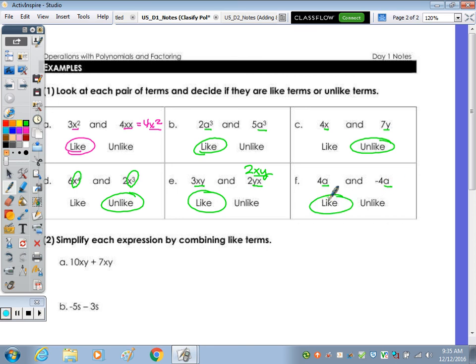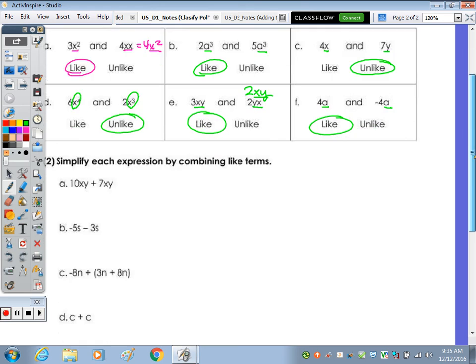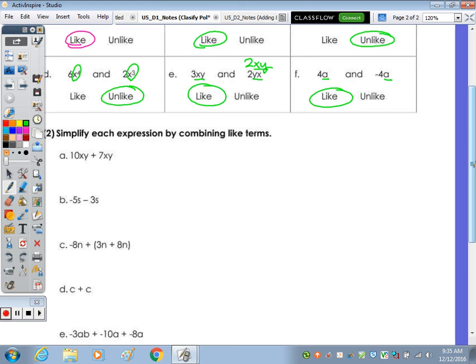So we're gonna, in the expressions below, a through h, just go ahead and combine like terms. So in a, we have 10xy and 7xy.